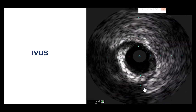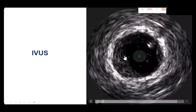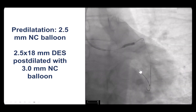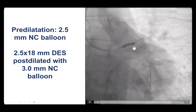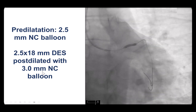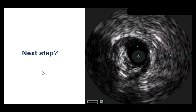There is also some plaque at the ostium of the LAD. The vessel was predilated with a 2.5 mm balloon, which one might argue might be a little undersized given the intravascular ultrasound findings. Then a 2.5 by 18 mm stent was deployed and post-dilated with a 3.0 mm balloon. Then IVUS was performed.